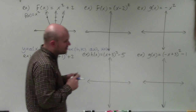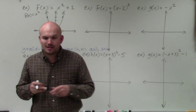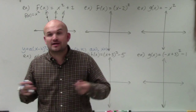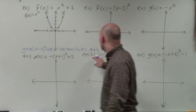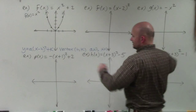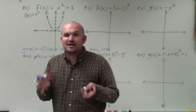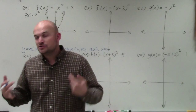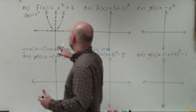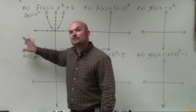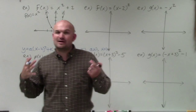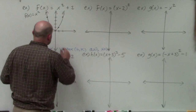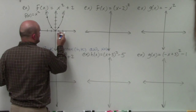Basically, what we're going to do is identify the new vertex and then redraw that graph. Since the absolute value of a is equal to 1, there's not going to be any compression or stretching — I'm just going to take this graph and move it around. The easiest way to do that is to identify the vertex. In this example, the vertex is at 0, 0.